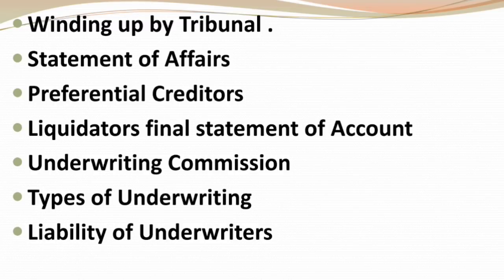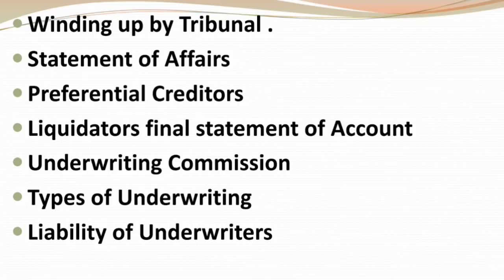Next is Winding Up by Tribunal — its procedure needs to be studied. Then Statement of Affairs, also related to the Liquidation of Companies chapter. Next is Preferential Creditors — how many types there are, including wages and salaries, taxes due for the last 12 months, the Rs. 20,000 employee limit, and the 4-month rule — all these points need to be remembered.